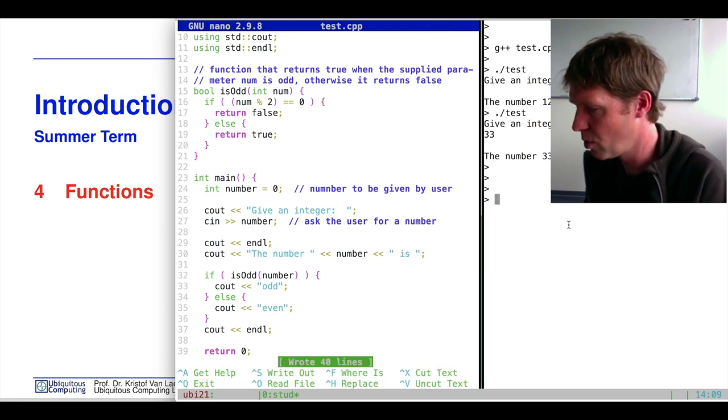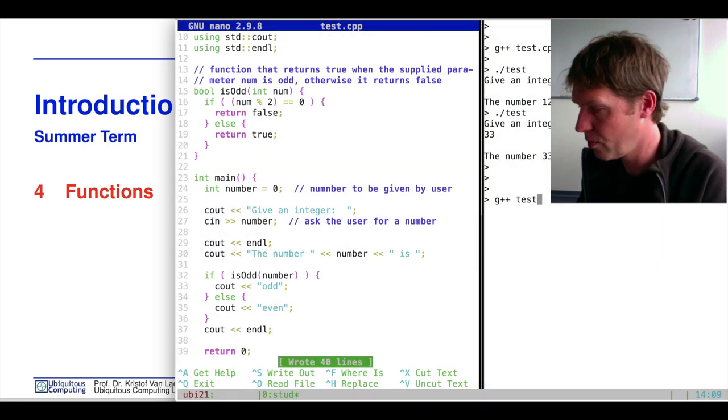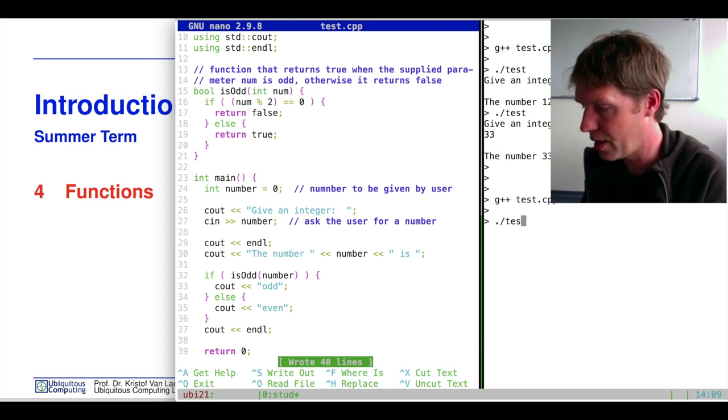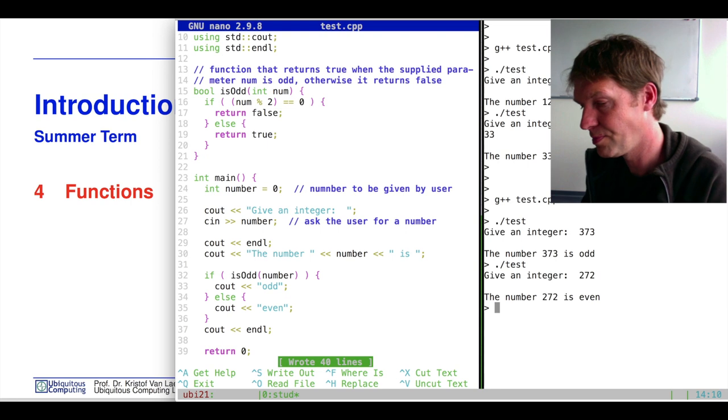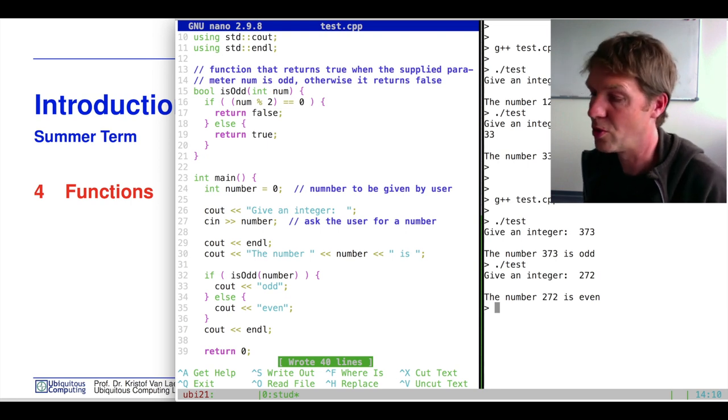Let's see if this works. Let's execute this into our executable test, first compiling and then we execute it. If we have an integer that is odd, we get odd. If we get an integer that is even, we get even. So that is what we are going to see today.